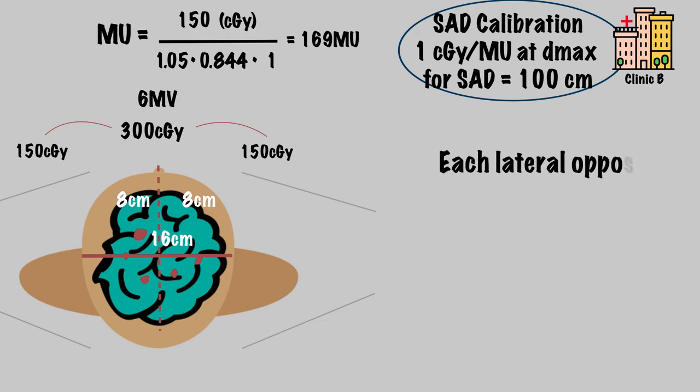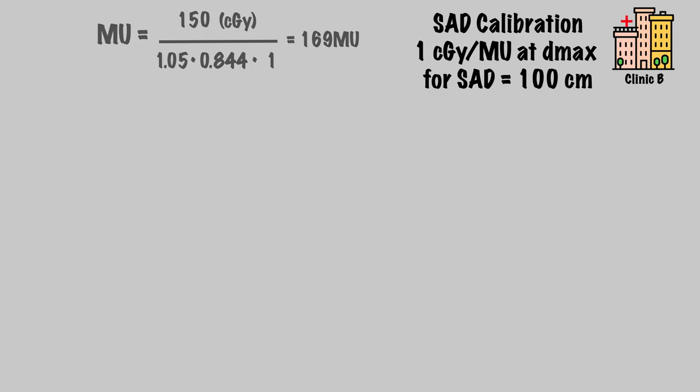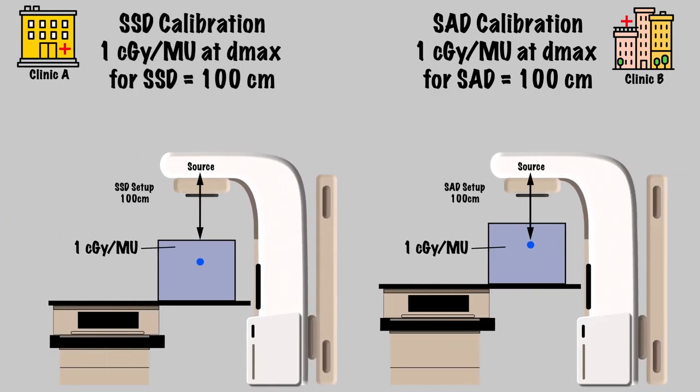So each beam should deliver 169 monitor units, for a total of 338 monitor units per fraction. For those gunners in the front row who have noticed our clinics conveniently use reference conditions that are the same as the respective treatment setups, good catch!